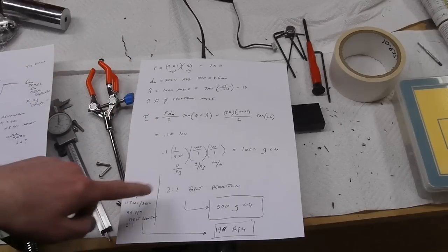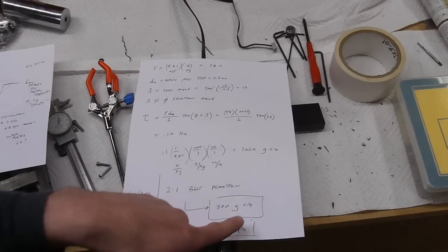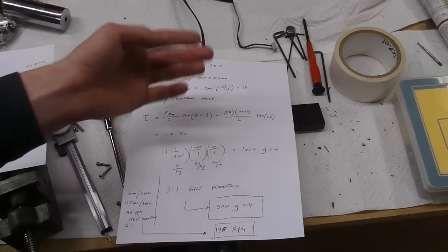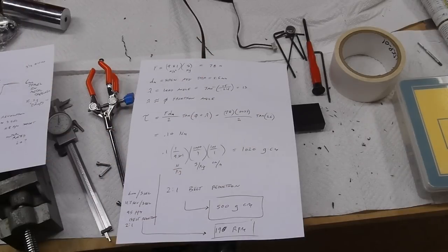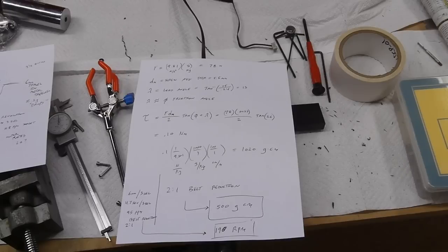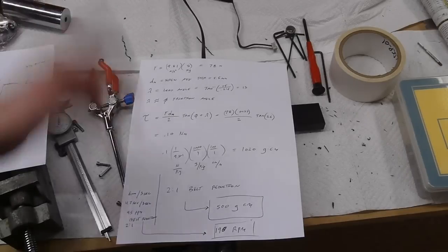I'm not going to go through this, but it comes out with the belt reduction to be 500 gram-centimeters. When you look through a catalog, they don't rate these in Newton-meters for some reason—they always use gram-centimeters because it's a rounder number. The speed is 190 rpm based on that three-second dispense time.